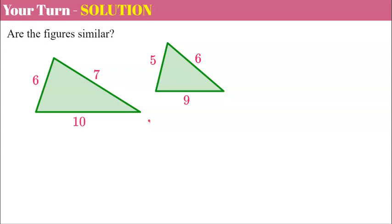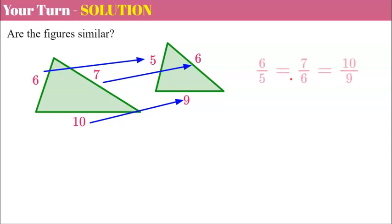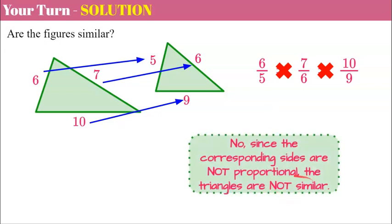Welcome back. Understanding that similar figures have corresponding sides that are proportional, we identify the corresponding sides: six corresponds to five, seven corresponds to six, and ten corresponds to nine. Looking at our three ratios, six-fifths is not equivalent to seven-sixths. Using cross product property: six times six is thirty-six, five times seven is thirty-five — thirty-six does not equal thirty-five, so they're not proportional. Seven-sixths is also not equivalent to ten-ninths. Since corresponding sides are not proportional, these figures are not similar.